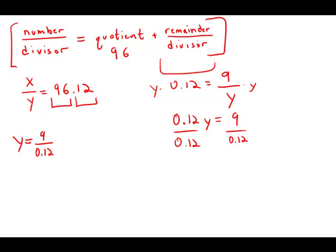I'm going to move the decimal places over. Move the decimal two places over in the numerator and the denominator, so we get 900 over 12.